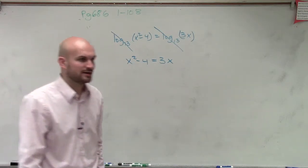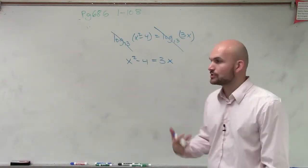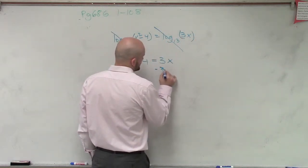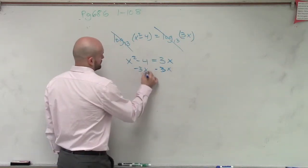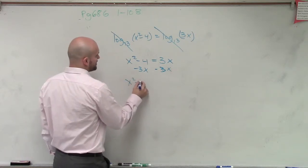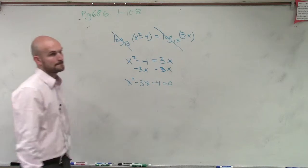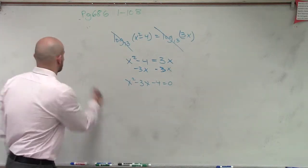Now the issue we have here is now we have a quadratic term, so we have to solve this. Solving quadratics, we need to make sure we set equal to 0. So therefore, I have x squared minus 3x minus 4 equals 0.